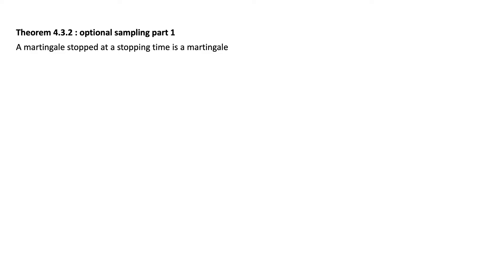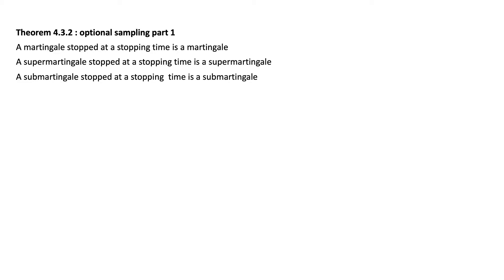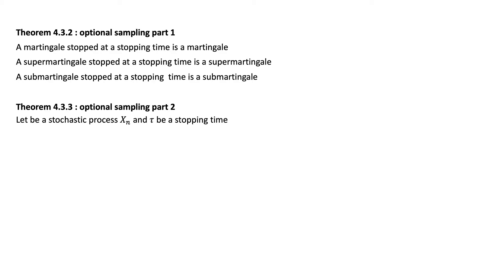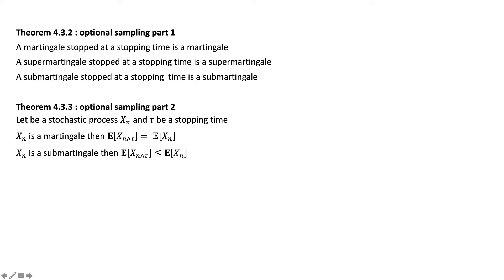These results lead to the Optimal Sampling Theorem, Part One. The theorem states: a martingale stopped at a stopping time is still a martingale; a super-martingale stopped at a stopping time is still a super-martingale; and a sub-martingale stopped at a stopping time is still a sub-martingale.